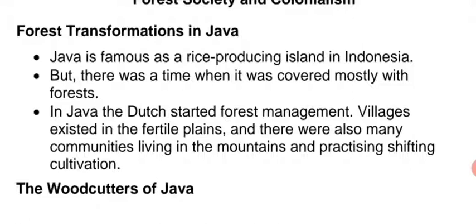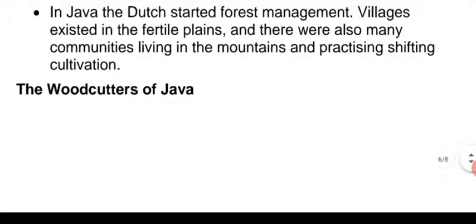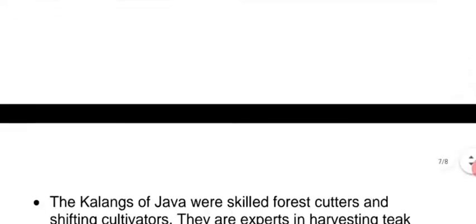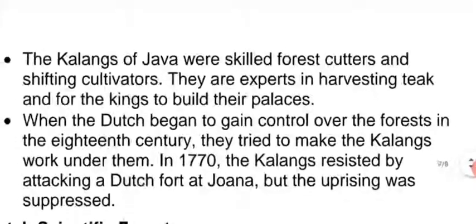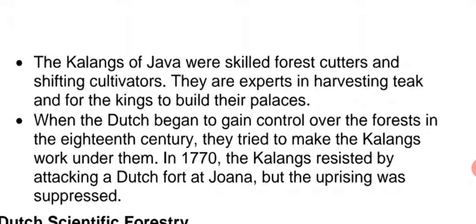Just as India was colonized by the British, Java was also colonized by the Dutch. Villages existed in the fertile plains, and there were also many communities living in the mountains and practicing shifting cultivation. There were communities in the mountain regions who were skilled woodcutters and practiced shifting cultivation — their lives were fully dependent on the forest.